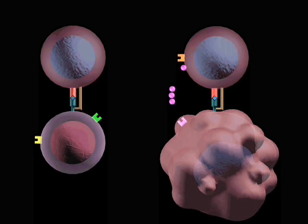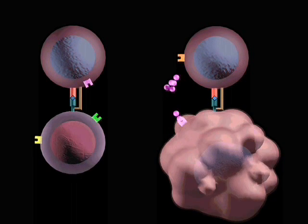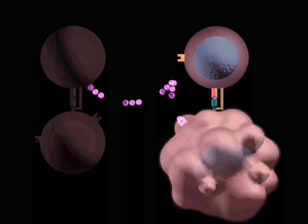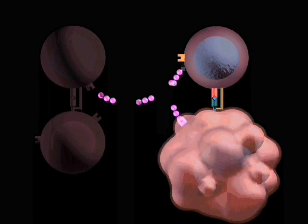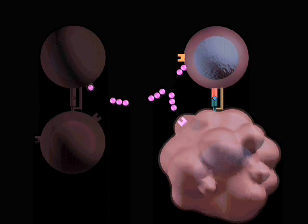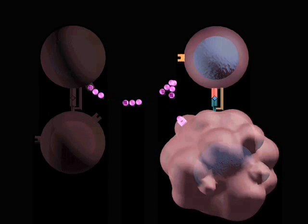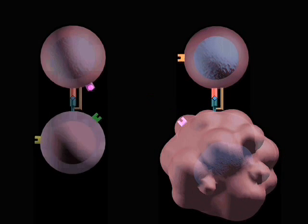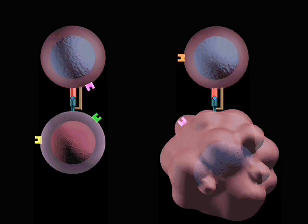If a cell-mediated response occurs, the interferon gamma, which activates the macrophage, also inhibits proliferation of the Th2 cell, thus suppressing the antibody response. IFN gamma also acts on B cells to modulate antibody class switching. The immune system therefore goes into one mode of response or the other.